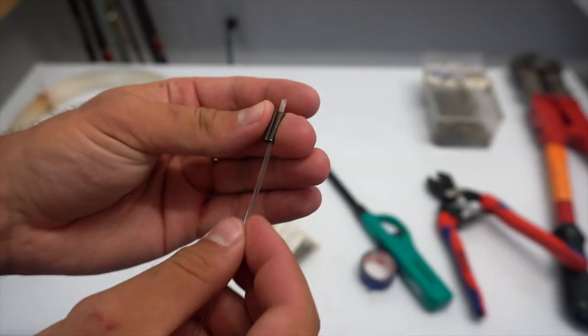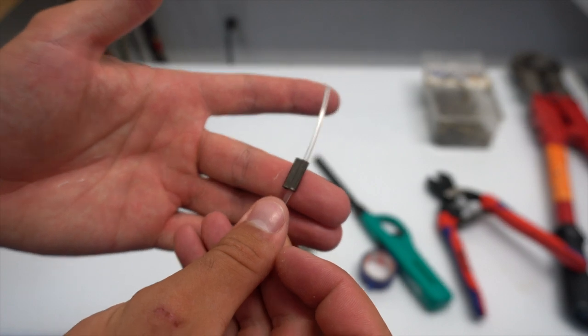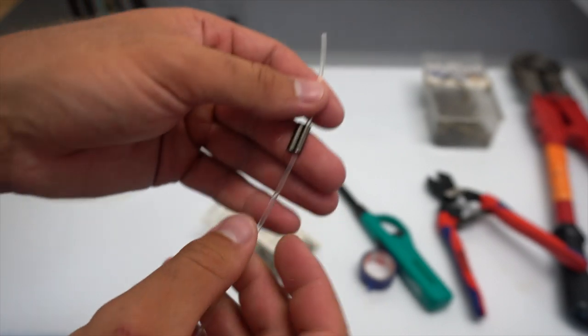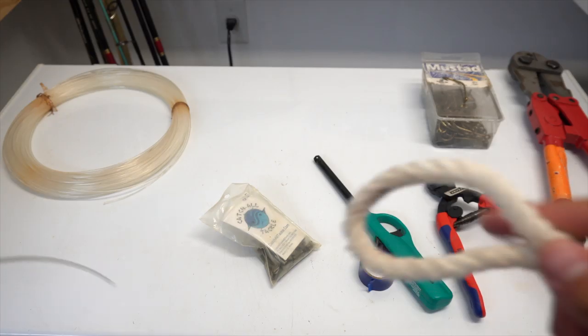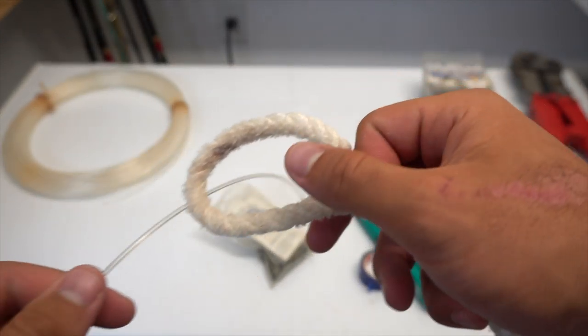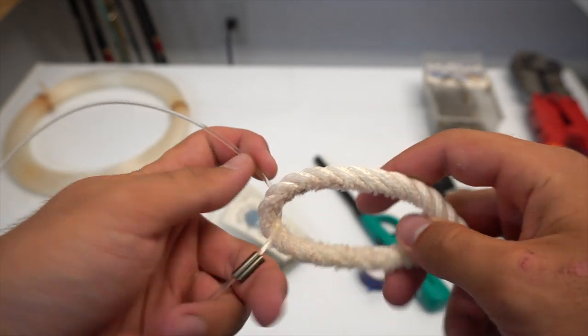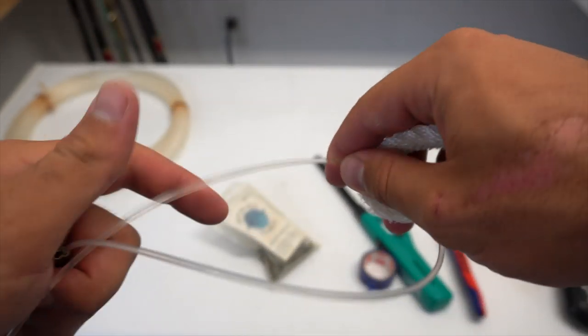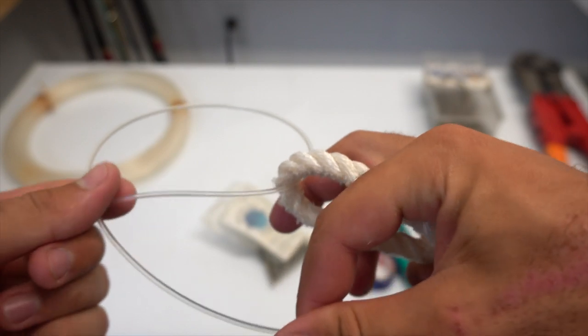You then want to slide one of the crimps onto the line to start off with. I'm going to show you how to do this very strong loop connection that you can do with mono. I forgot the actual name of it, but it's a very good connection when you're going to have heavy stress on the line.